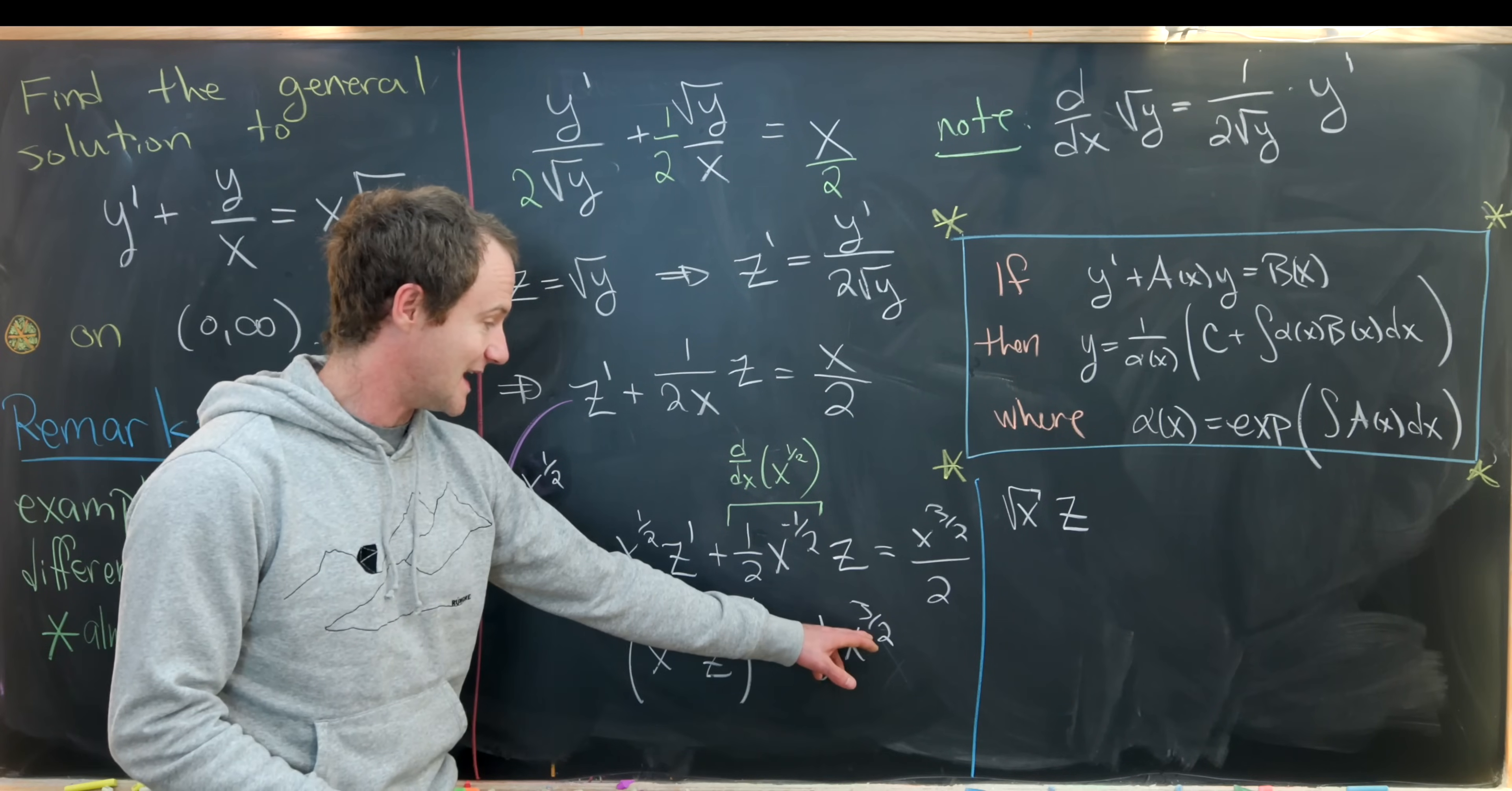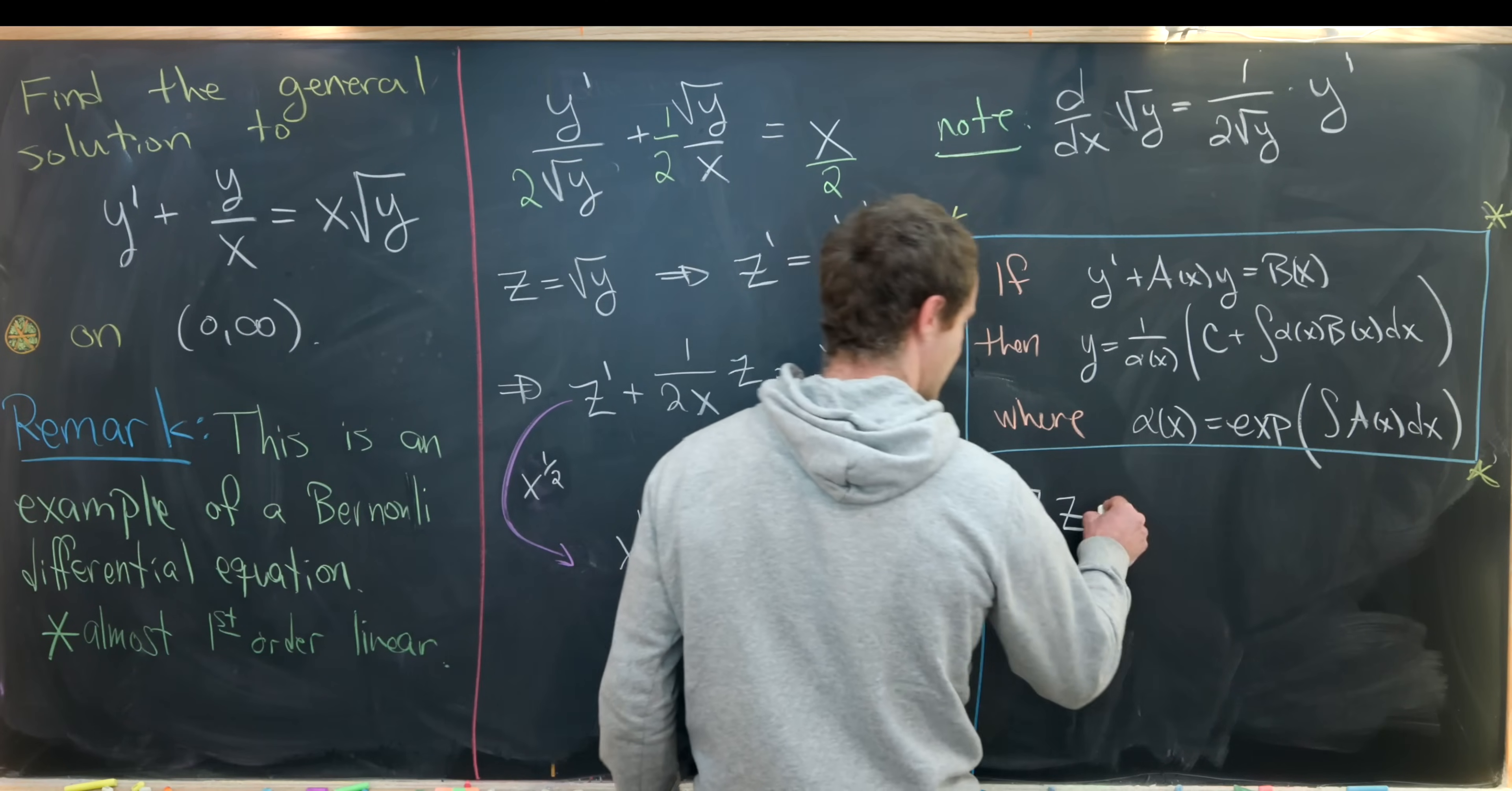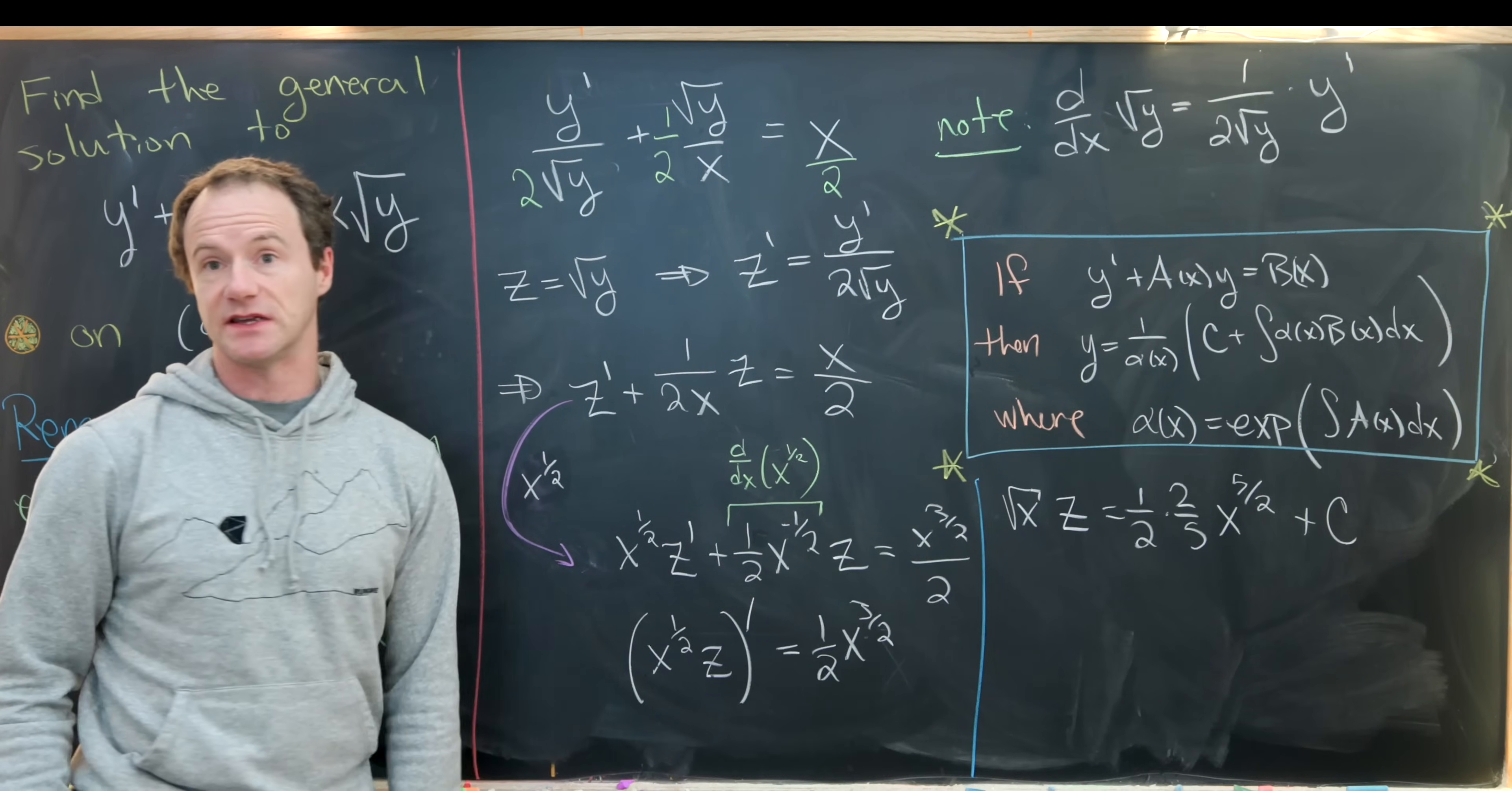We'll have the square root of x times z. Now we need to increase the exponent here by one and divide by the new exponent, so the new exponent will be five halves. Dividing by five halves is the same thing as multiplying by two fifths, so we have one half times two fifths times x to the five halves, and then that's going to be plus a constant c.